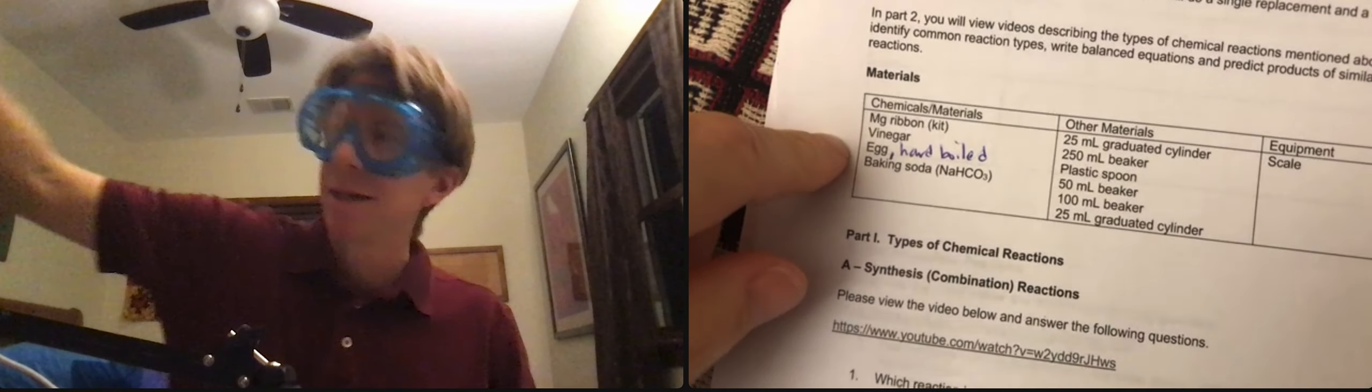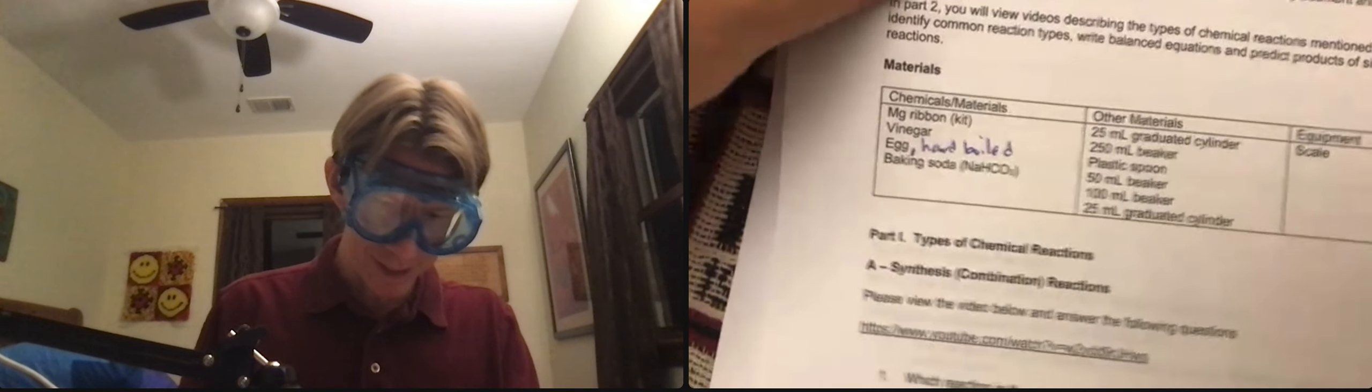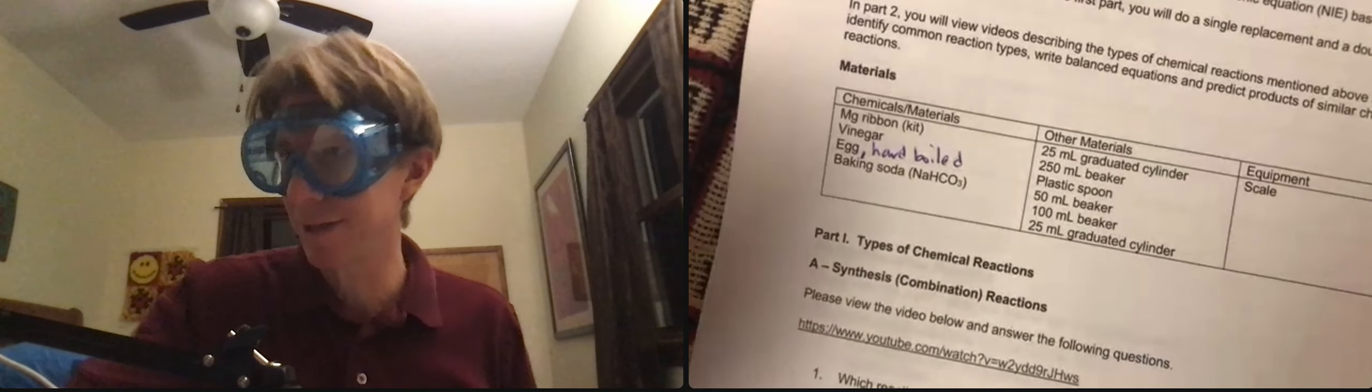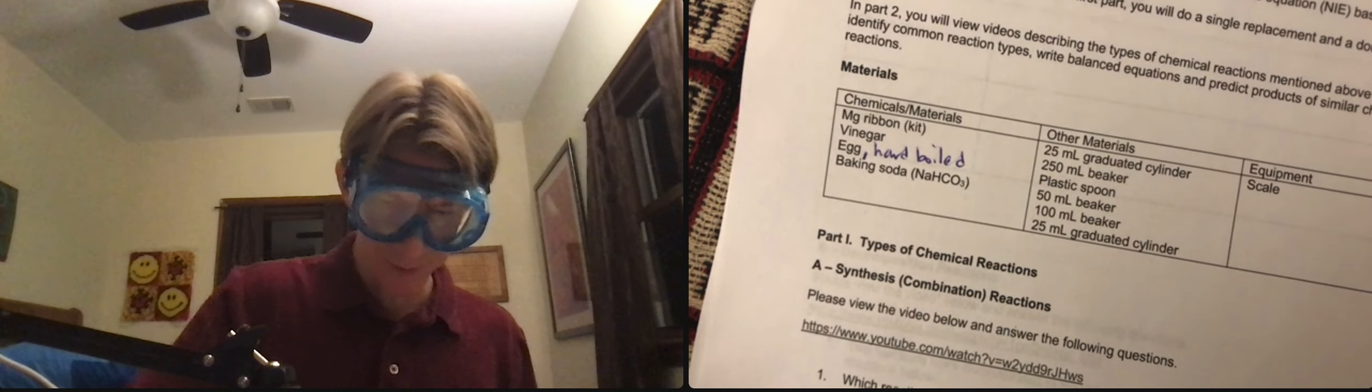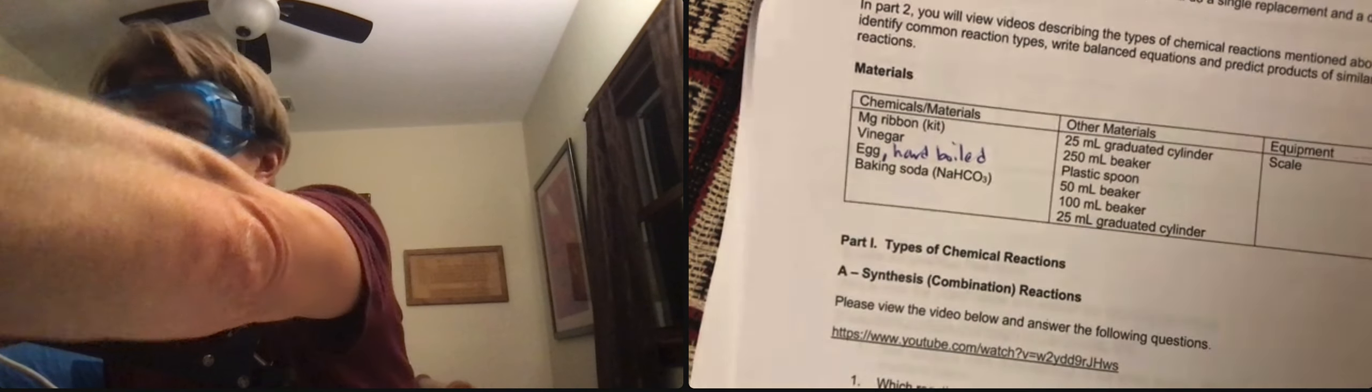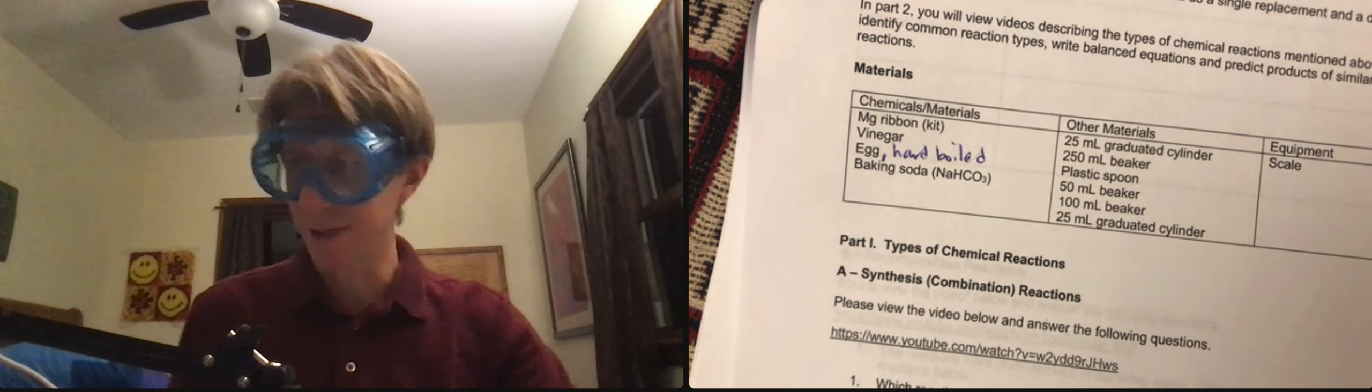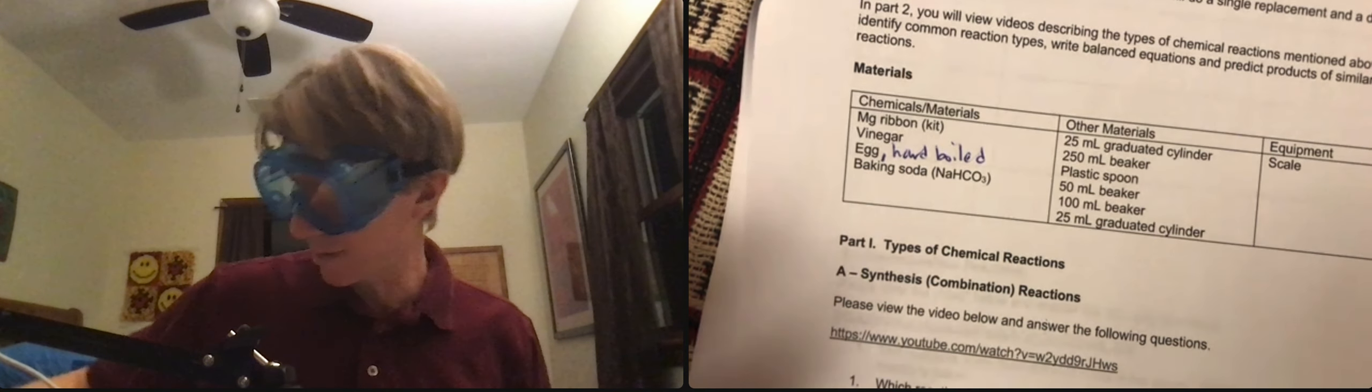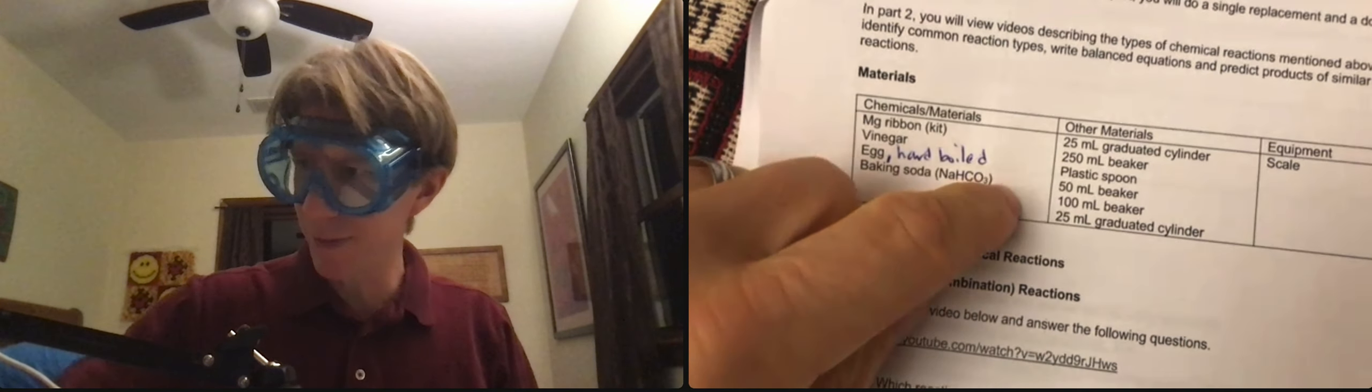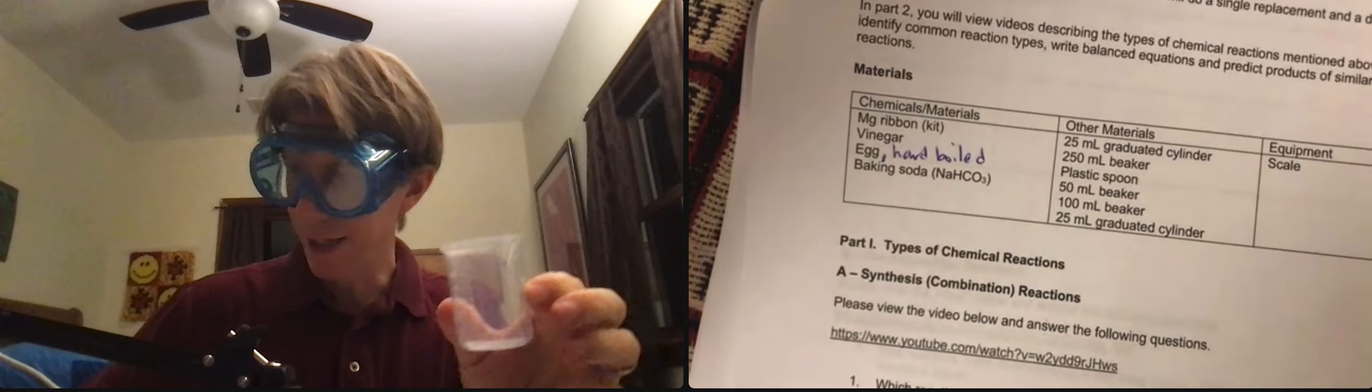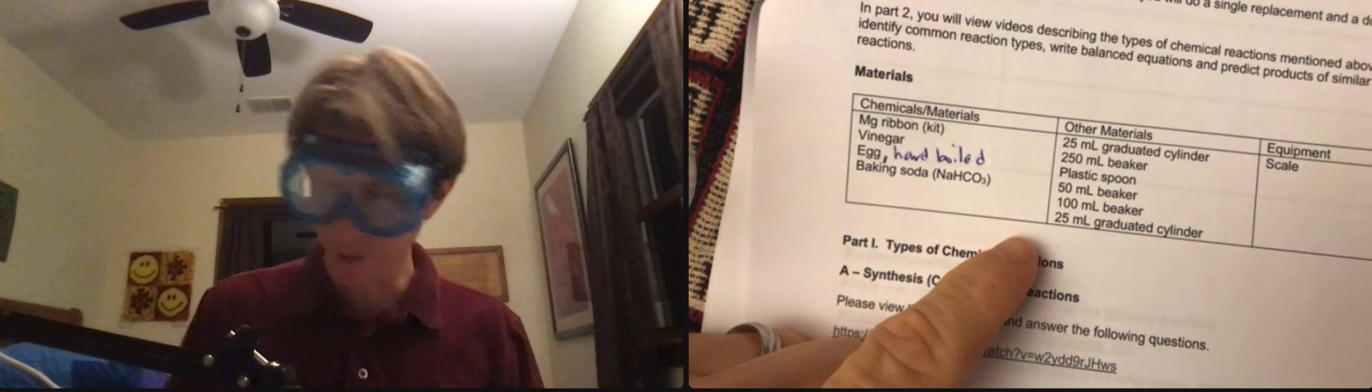Baking soda - any baking soda will do. I've got your typical Arm and Hammer. 25 milliliter graduated cylinder. My 25 milliliter graduated cylinder already has my five mils of vinegar in it because I know what's coming. A 250 milliliter beaker, clean and dry. A plastic spoon, same plastic spoon as last time. A 50 milliliter beaker, a 100 milliliter beaker, and a 25. We only need one of them.